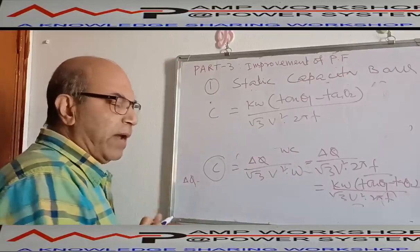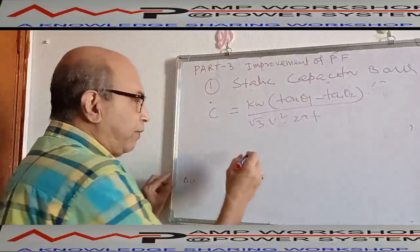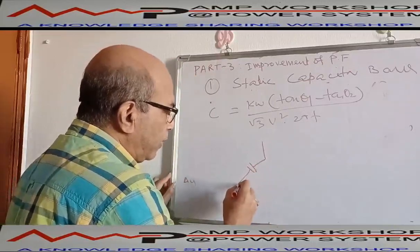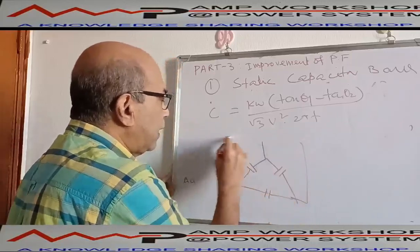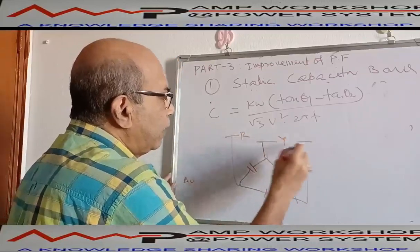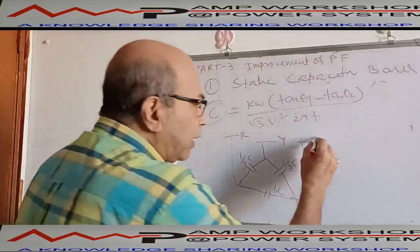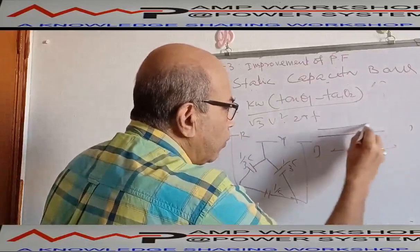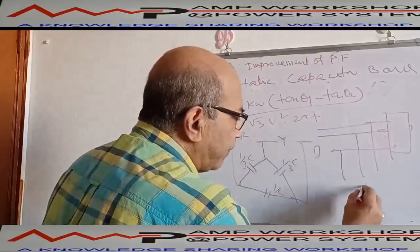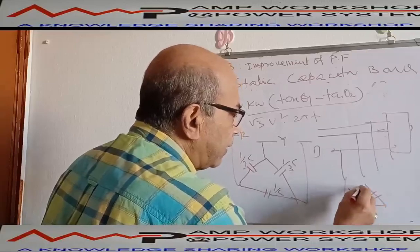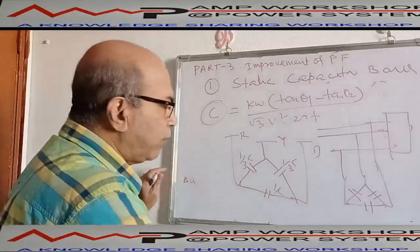So the capacitance value C equals kilowatts × (tan θ1 − tan θ2) divided by (√3 × V² × 2πF). This is the capacitance to be added to the line. For a three-phase system, we generally connect this capacitor bank in delta form — three capacitors connected in delta across the red, yellow, and blue phases. The capacitor bank is connected in parallel to the three-phase line going to the load.